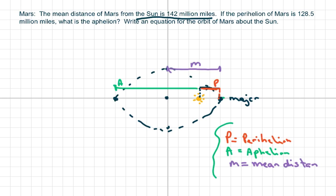So basically all we have to do is we have all this information. This is 142 million. And the perihelion is 128.5 million. What we're going to do is multiply this by 2 and subtract to get the aphelion, the longest distance. So I'm going to take the mean distance, which is 142 million miles. So basically A already is 142 million.